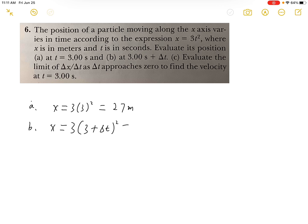And we simplify this, we will have 3 times 9 plus 6Δt plus Δt squared. And we have 27 plus 18Δt plus 3Δt squared.